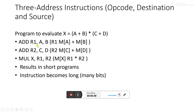In a three address instruction, the format is: opcode, destination, and source. I will add two numbers using three address locations. For example, ADD R1, a, b — R1, a, and b are the three addresses. Some data is at memory location a, some at b, and the result is stored in register R1. Similarly, c and d will be added and stored in register R2.